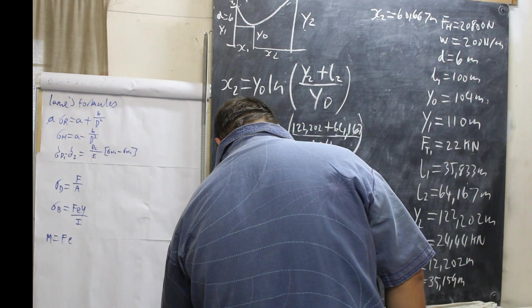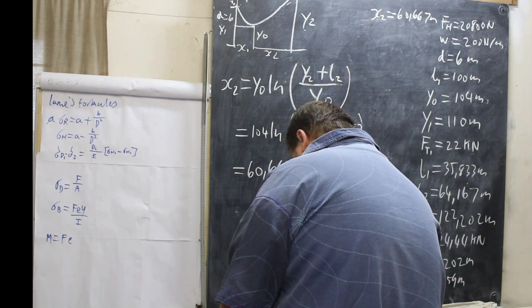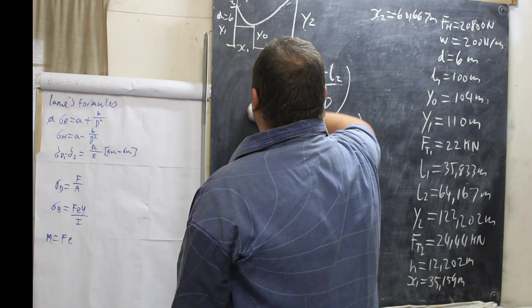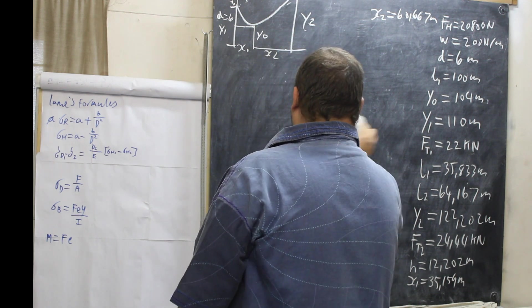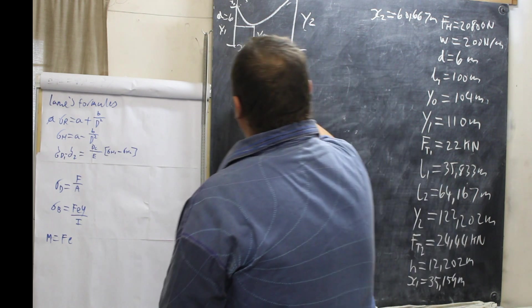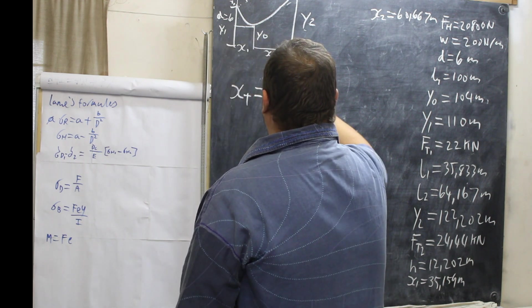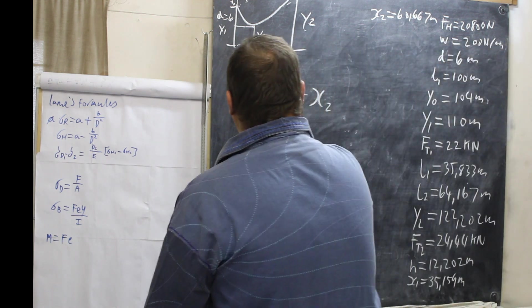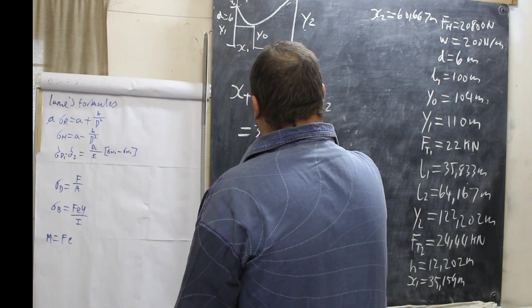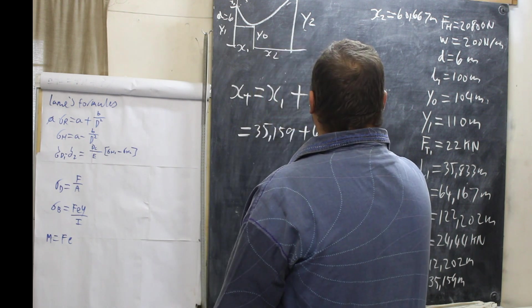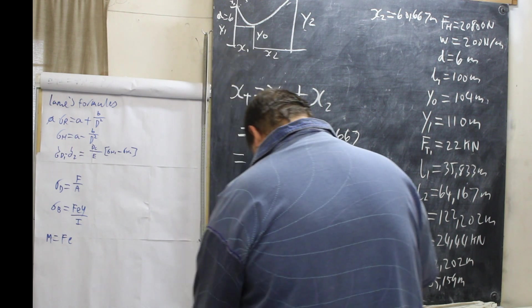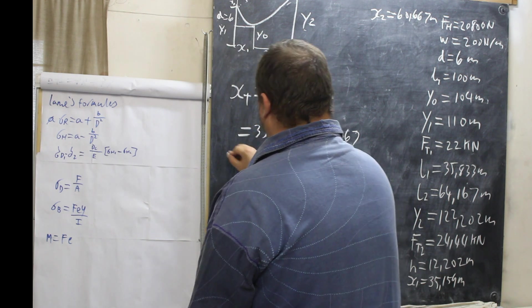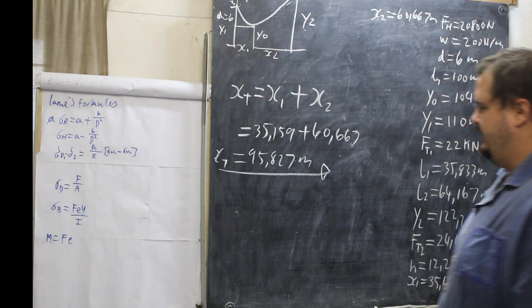Now our final sum. We want the total length between the two, the horizontal distance between the two supports, and that is extremely simple. The horizontal distance between supports is X total equals X1 plus X2. So what we have to do now is say X1 35.159 plus 60.667, which gives us 95.827 meters is X total. And that is our final answer.